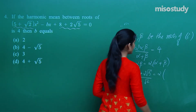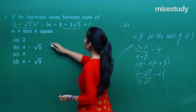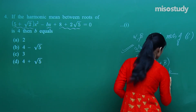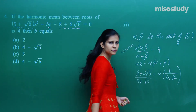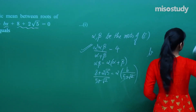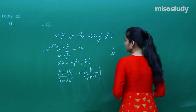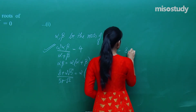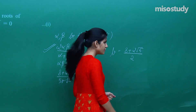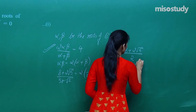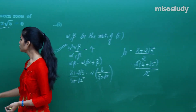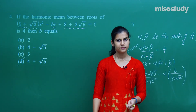And 2(α+β) is twice the sum of roots, which equals 2 × [-b / (5+√2)] — where b is the coefficient of x. Setting αβ = 2(α+β), the (5+√2) cancels, and b = (8 + 2√5) / 2 = 4 + √5. So the answer is b = 4 + √5.